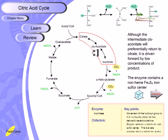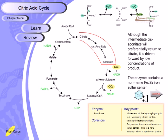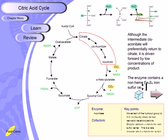Another unique feature is that the aconitase enzyme contains a non-heme iron-sulfur cluster. Normally when we talk about iron-sulfur clusters we expect a heme center, but in this case the cluster is arranged in a cubic form without any heme in the central region — that is a unique feature of this enzyme.